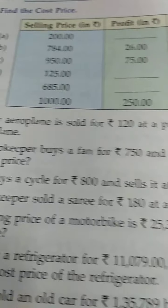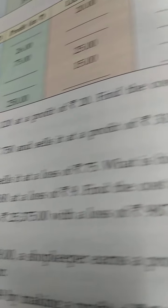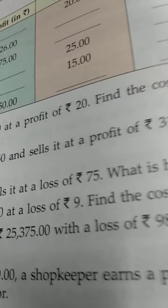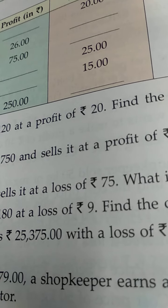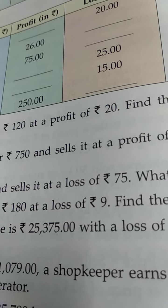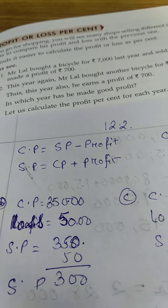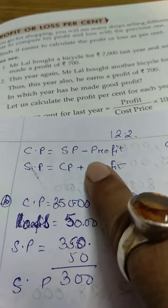So, the first solving sum is: a toy airplane is sold for Rs. 120 at a profit of 20. Find the cost price. Okay, I think till now you have got the formula. What is the formula of cost price when we are getting? So, when SP and profit is given, we have to find CP, then SP minus profit.